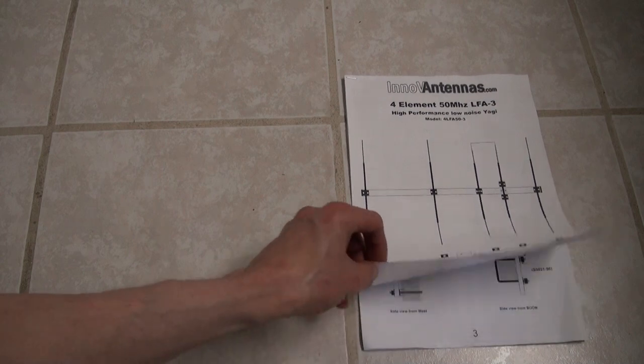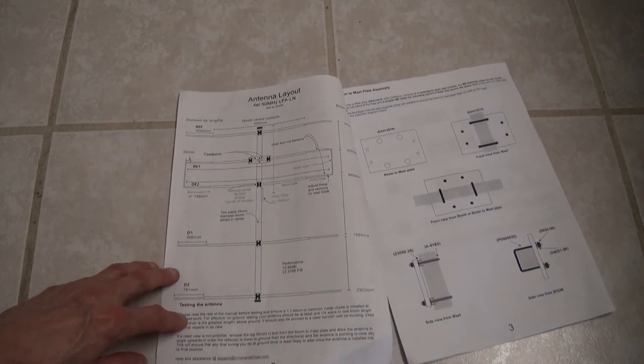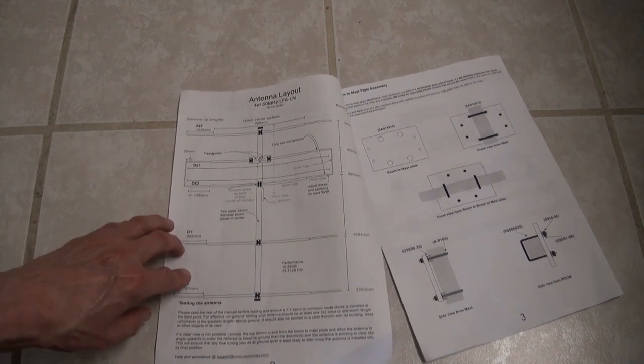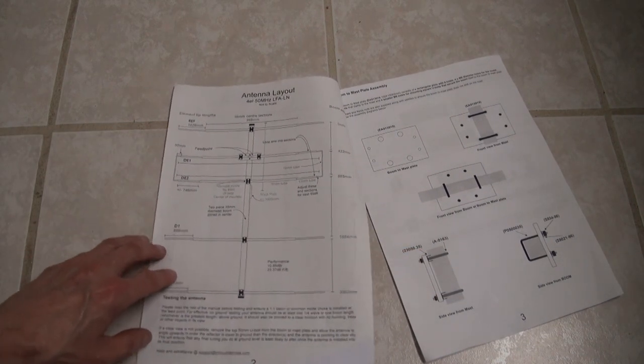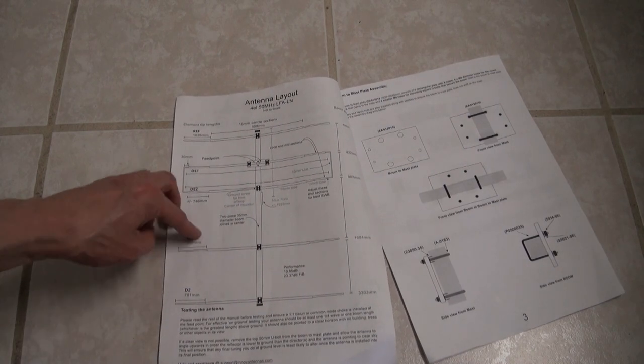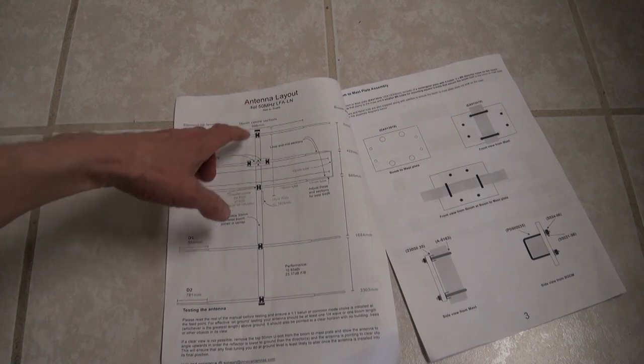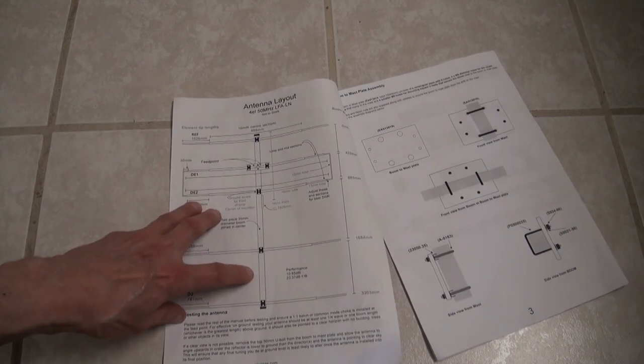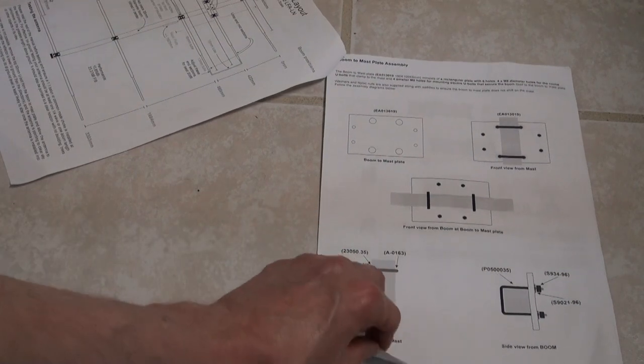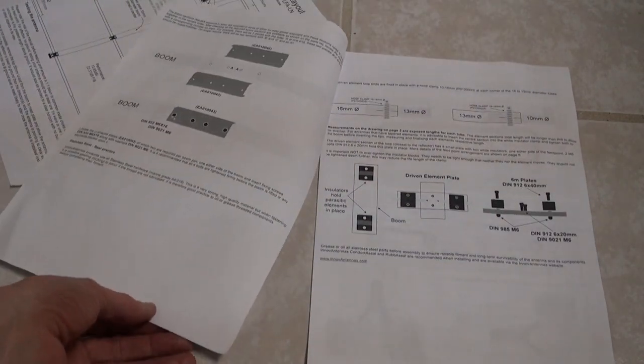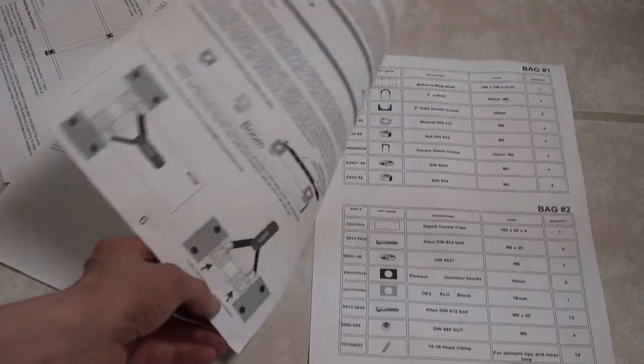The instruction manual has some issues. One of the more interesting things was the lack of detail on how to assemble the elements. Nowhere in the narrative or even in illustrations does it show you how to build the two directors, the two driven elements, or the reflector. What you do is you go by the antenna layout and then you work with the parts list that's in the back of the assembly manual. There is some detail here, and the assembly manual is not a complete loss, but more detail and less confusion would have been helpful.